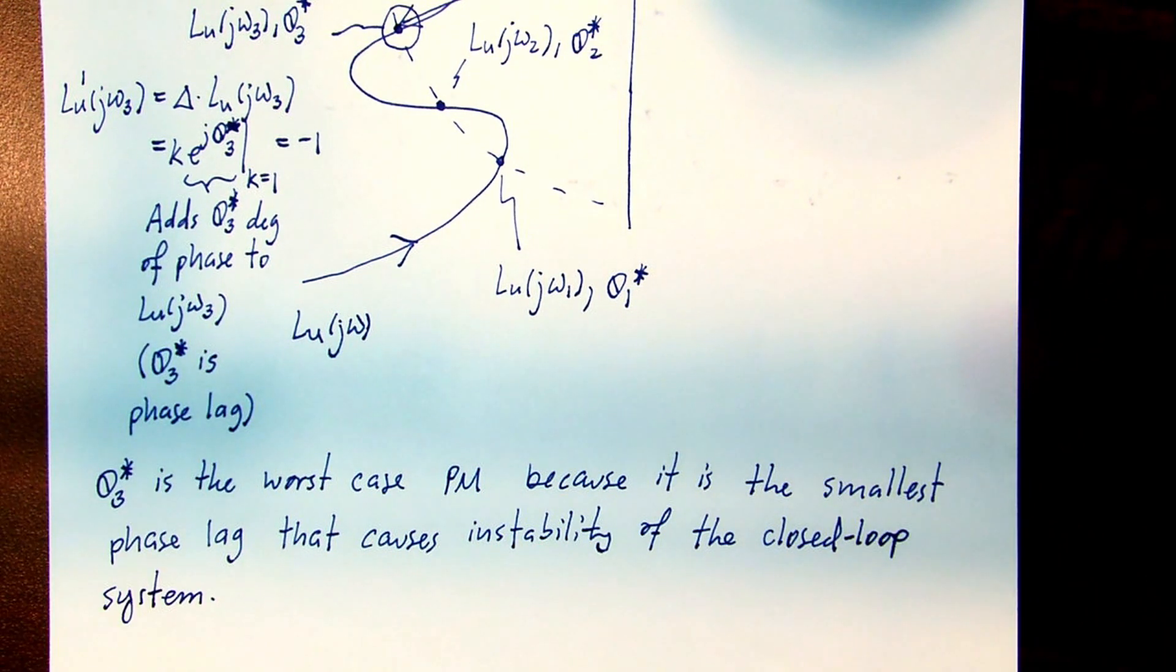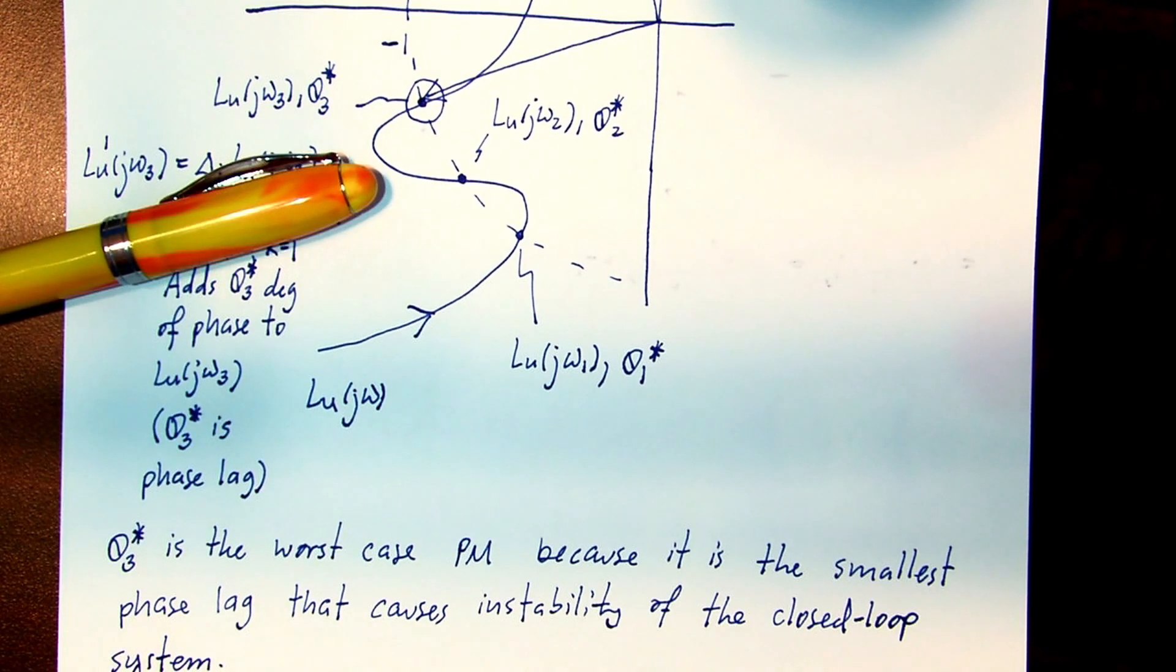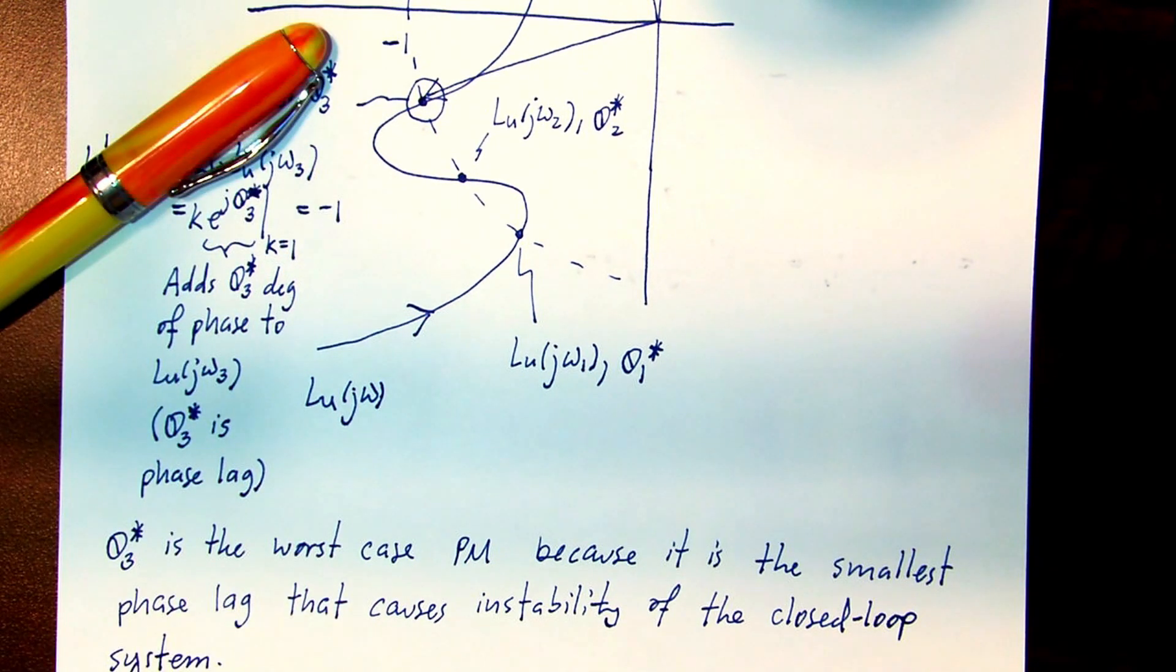In summary, when multiple margins exist, we must consider those that are closest to the critical point to analyze the stability and robustness of our closed loop system.